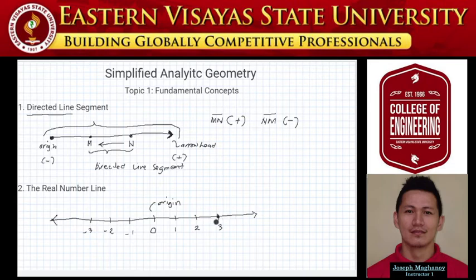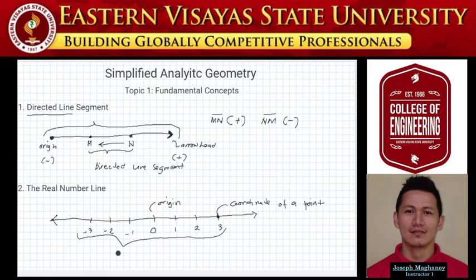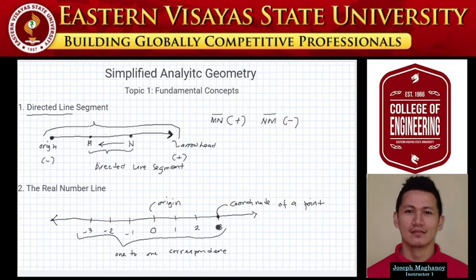At any point along the line, for example at point three on the positive side, we call this the coordinate of a point. For the set of real numbers corresponding to the set of points on the directed line, we call this relation one-to-one correspondence. Each point along the line has a coordinate. I hope the concept of the real number line is clear.